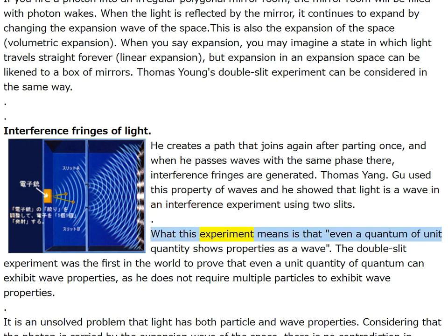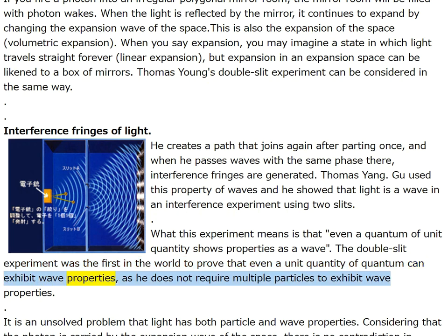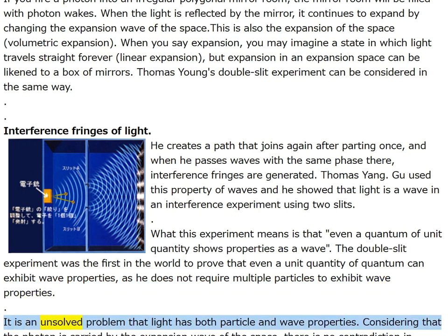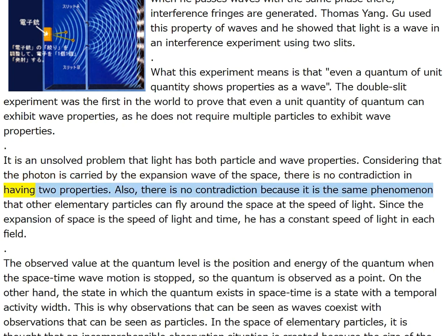What this experiment means is that even a quantum of unit quantity shows properties as a wave. The double slit experiment proved that even a unit quantity of quantum can exhibit wave properties — it does not require multiple particles to exhibit wave properties. It is an unsolved problem that light has both particle and wave properties; considering that the photon is carried by the expansion wave of the space, there is no contradiction in having two properties.